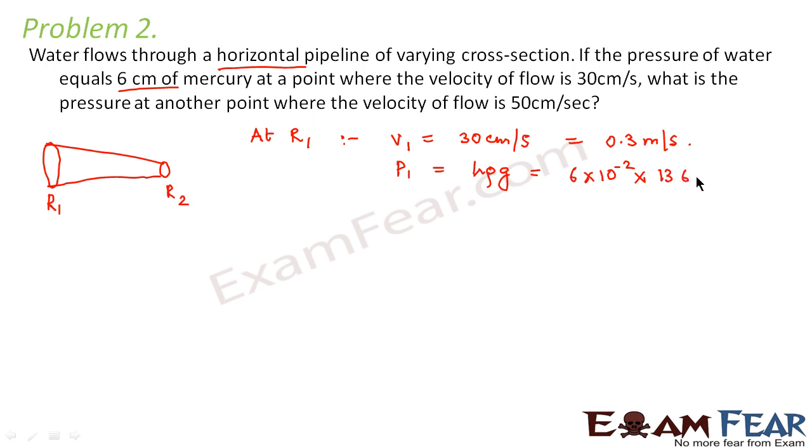Density of mercury is 13600 kg per meter cube. So please note that density of mercury is equal to 13600 kg per meter cube.